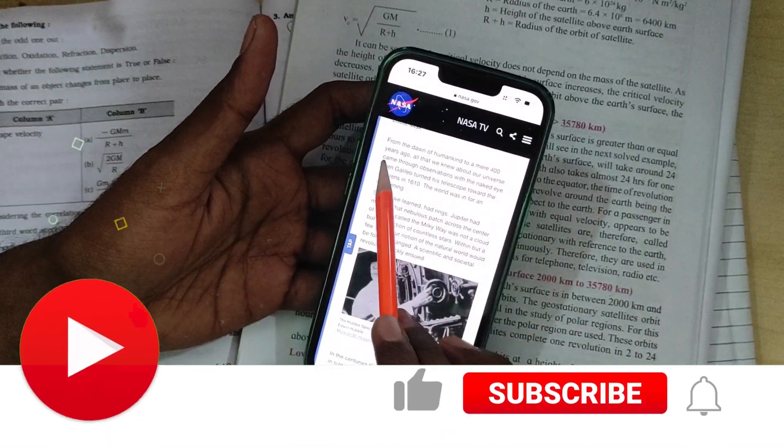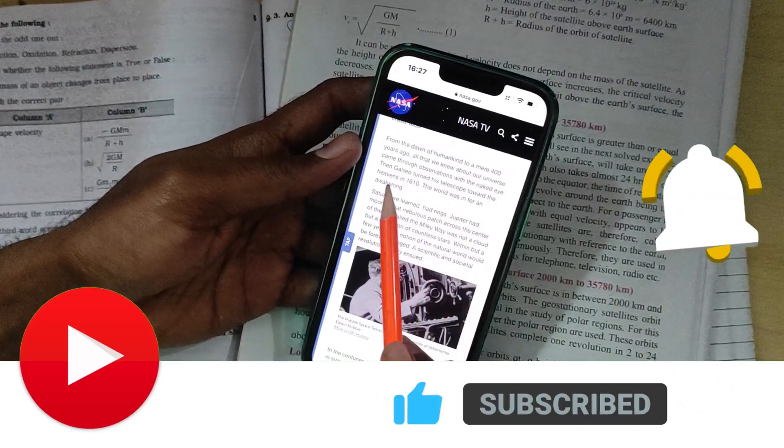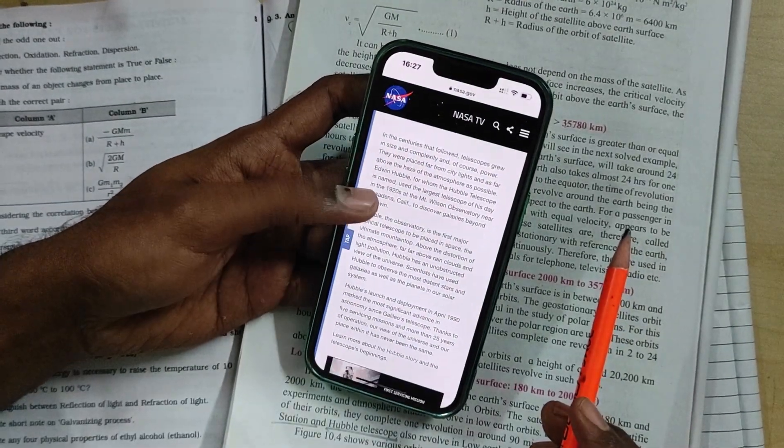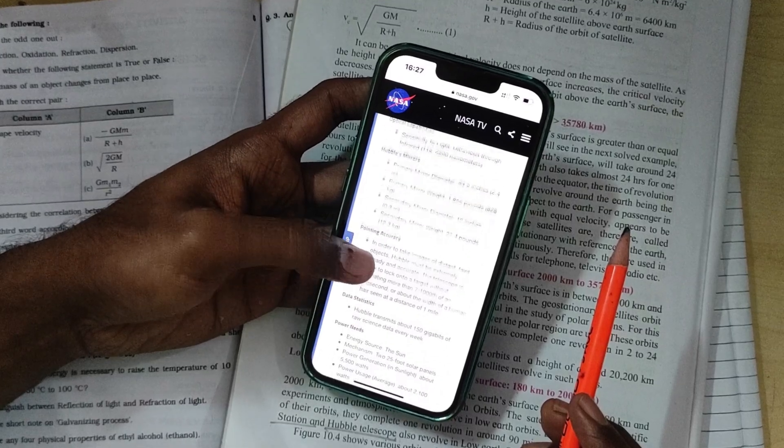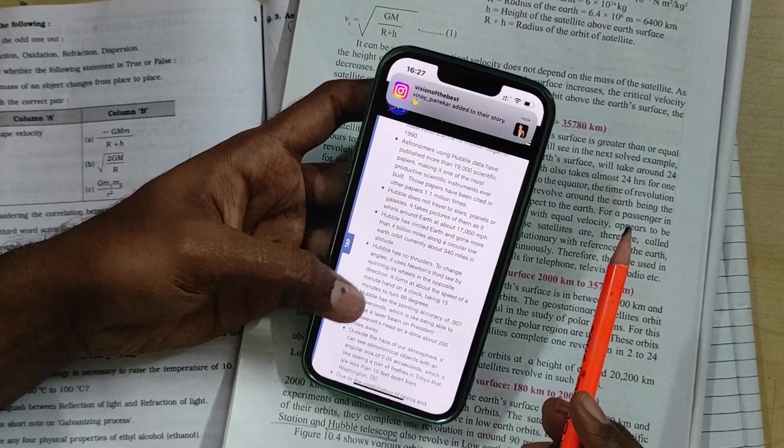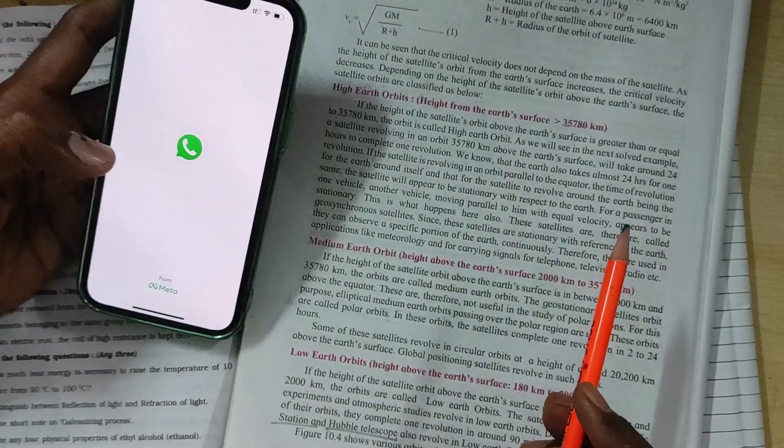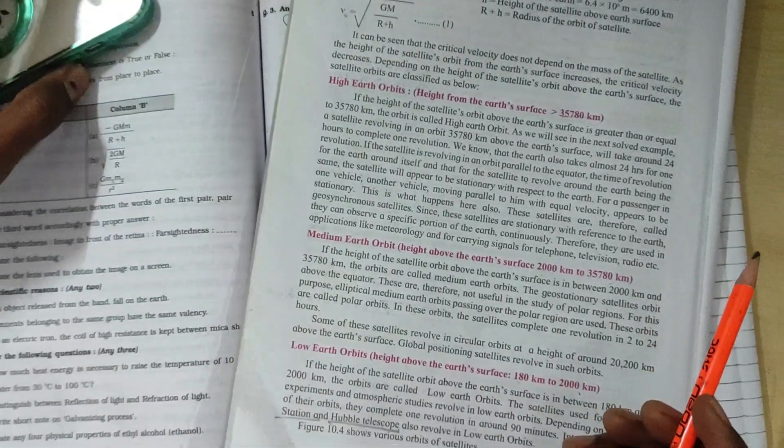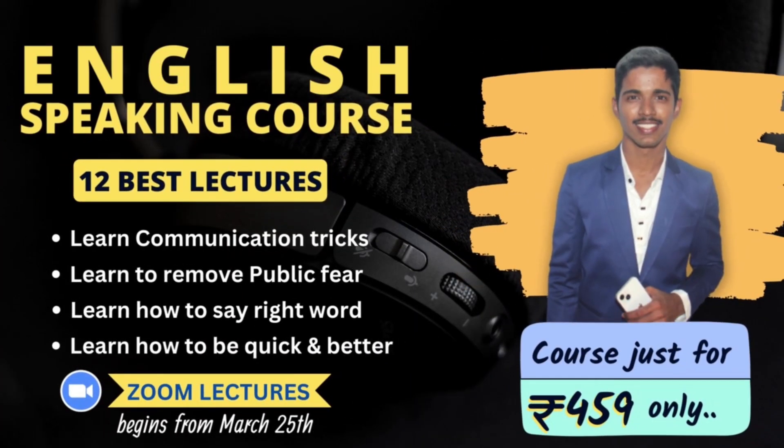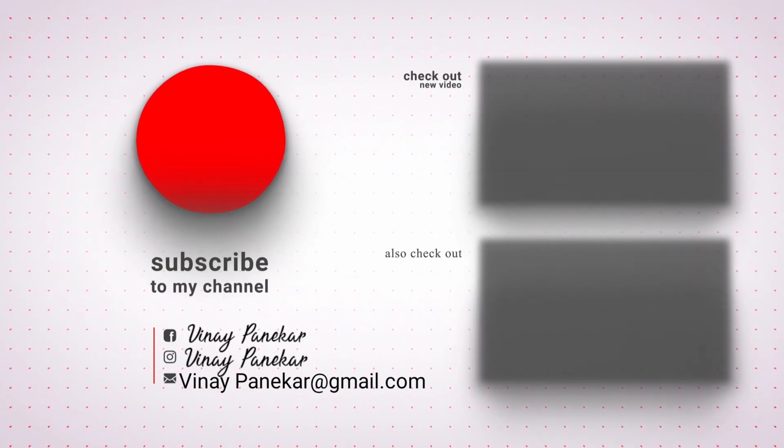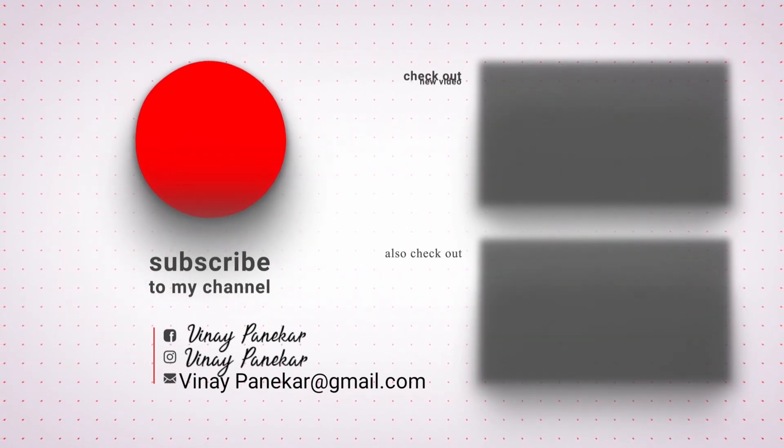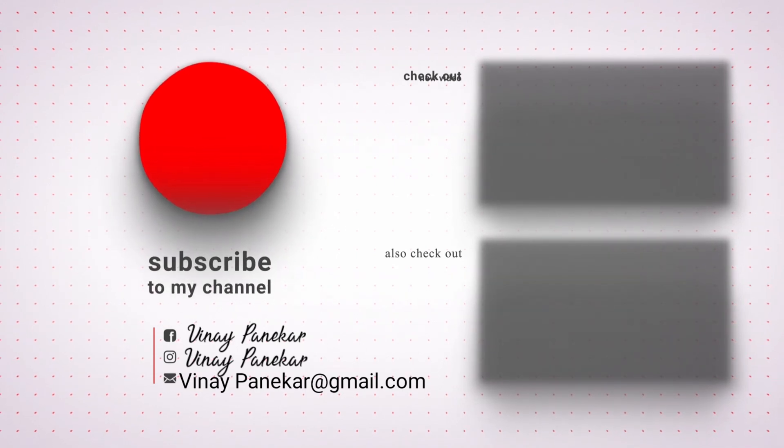The Hubble telescope is a space telescope that was launched into low Earth orbit in 1990 and remains in operation. So where is Hubble telescope right now? Might be in the stage of retirement. From the dawn of humankind to a mere 400 years ago, all we knew about our universe came through observation with the naked eye.